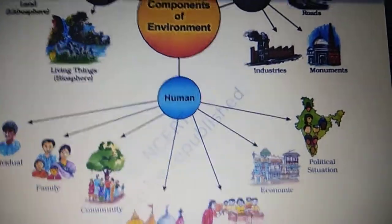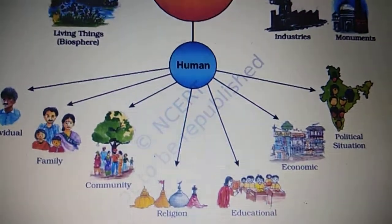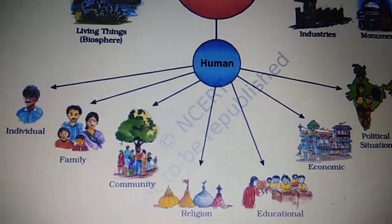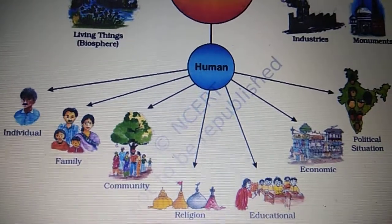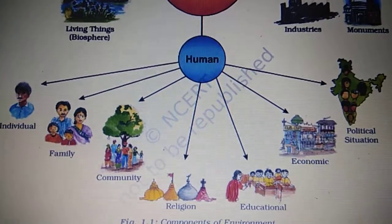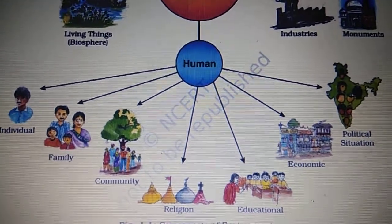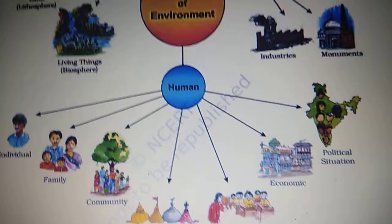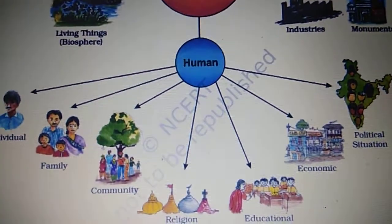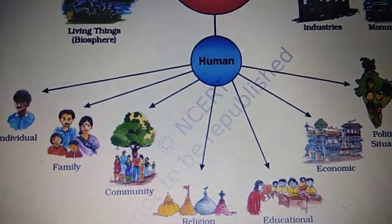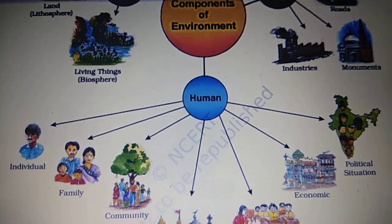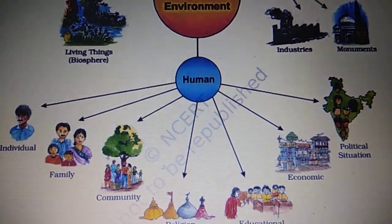Children, the next component of the environment is human environment. Now, who are humans? They are us. We are also part of a family, part of a community at large, part of a religious group. Then we go to school. Then we do trade and business when we grow up and earn money for ourselves. That comes under the new component of environment: human environment.